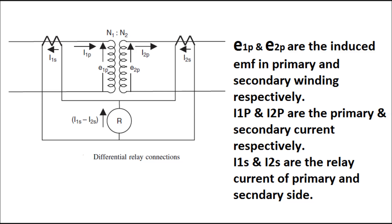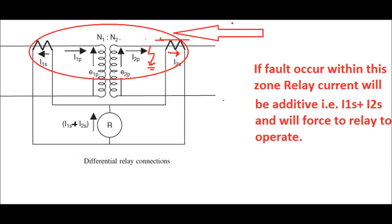During normal operation or normal load condition, the relay current will be I1s minus I2s. Therefore, during normal operation, the relay current sends a little bit of current, and therefore the relay will not operate.